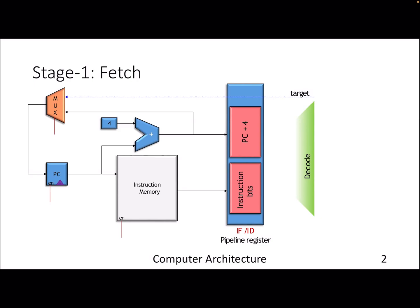The first stage, instruction fetch, is pretty easy as we have been discussing about it a lot. The program counter provides the address, which goes into memory. Memory provides the instruction. At the same time, the PC gets incremented to PC+4, and this is the inter-stage latch or pipeline register that will latch PC+4 and the instruction retrieved from memory at the end of the first cycle.